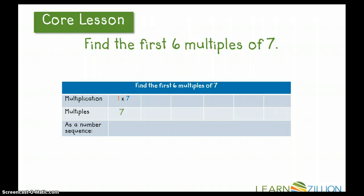One times seven is seven. Seven, when listing the first six multiples of seven, is my first multiple. Then, my next two factors are going to be two times seven, and my product and next multiple is fourteen. I'm going to continue doing this until I find the first six multiples of seven. And there they are. My first one is seven, my second multiple is fourteen, my third multiple is twenty-one, my fourth multiple is twenty-eight, my fifth multiple is thirty-five, and my sixth multiple is forty-two.